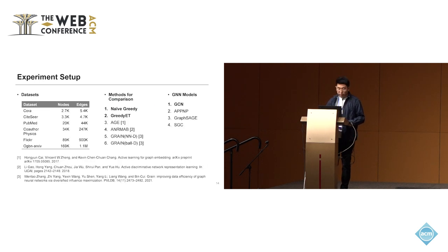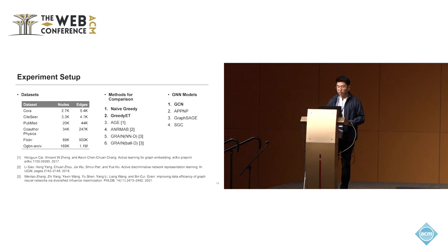For the experiment setup, we use six different datasets of varying scales for the node classification task. For comparison methods, we have four baseline methods and two versions of greedy. For GNN models, we consider four models to evaluate the performance of the methods, using GCN as the default model.